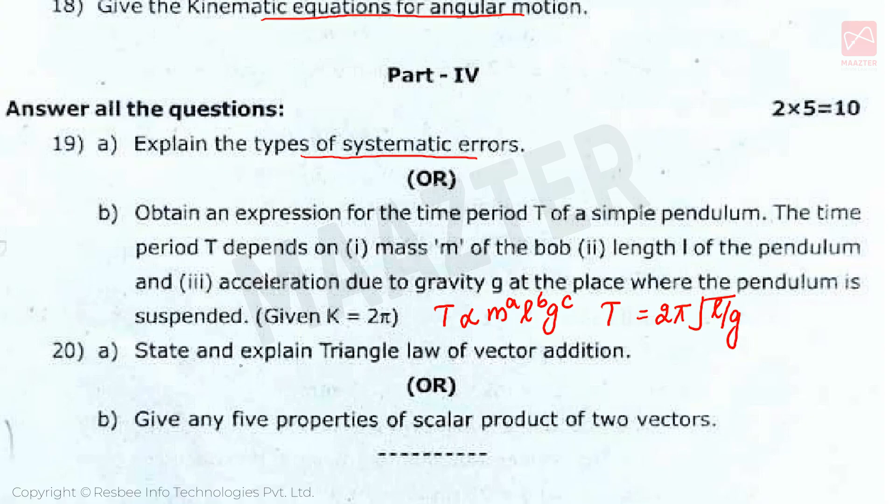Next question is: State and explain triangle law of vector addition. This is 5 mark question, so you must explain magnitude of the resultant vector and direction of the resultant vector. The optional question is: Give any 5 properties of scalar product of 2 vectors. 11 properties are given, from which you must write 5 points.